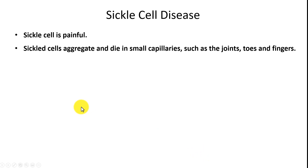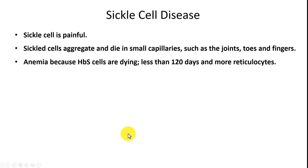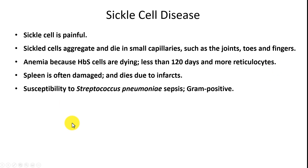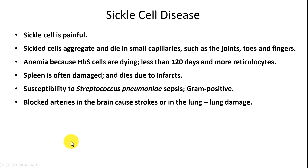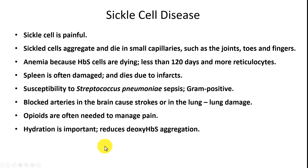Sickle cell disease is painful. Sickle cells aggregate and die in small capillaries such as the joints, toes, and fingers, cutting off blood supply and killing tissue. Anemia occurs because HBS cells die in less than 120 days, so bone marrow turns on to make more red blood cells, resulting in a high reticulocyte count. The spleen is often damaged and dies due to infarcts, making individuals susceptible to Streptococcus pneumoniae sepsis. Blocked arteries in the brain cause strokes and lung damage. Opioids are often needed, and the chance of addiction is high.